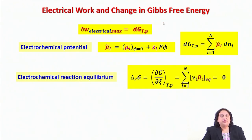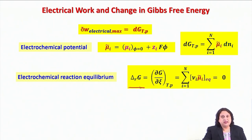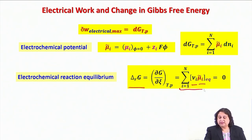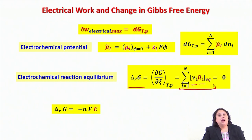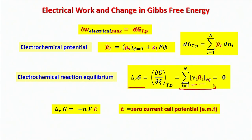The condition of electrochemical reaction equilibrium is given in terms of the reaction Gibbs energy, which depends on ν_i and μ̃_i for each component i in the reaction mixture. The summation over all components must go to zero. We have also shown that under the condition where you can measure the zero-current cell potential, delta_RG equals minus NFE, where N is the number of electrons transferred and F is the Faraday constant.